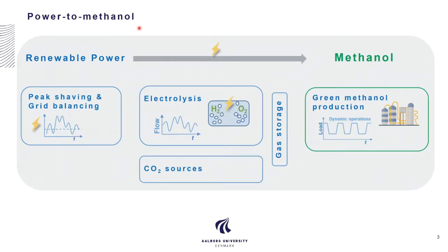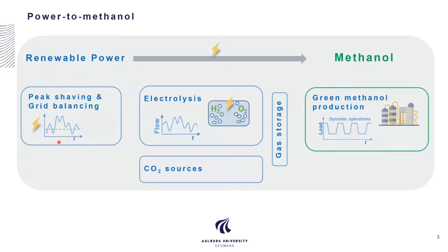Power-to-methanol is one option of power-to-X. A typical power-to-methanol process contains the following systems: electric grid, electrolysis, CO2 sources, gas storage, and green methanol production. It is a complex system where electric and chemical sections are involved. To design this system, there are several issues to be solved — for example, how to model this complex system, and what are the strategies to operate this system based on intermittent renewable energy.